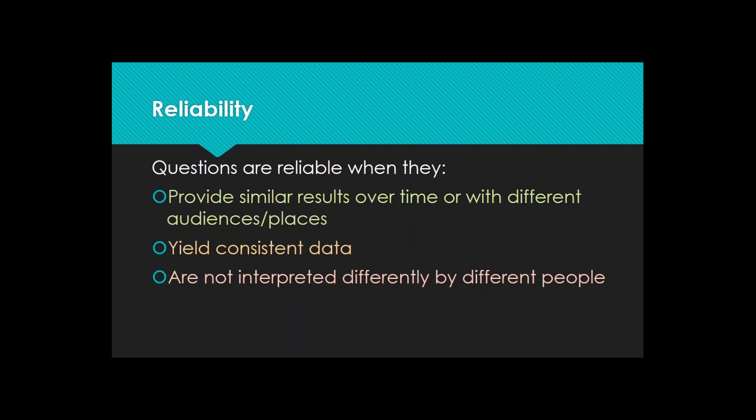Reliability means we get consistent answers on the question. If we were to use the same questionnaire over and over again with similar populations, we would get similar results — that's reliable data. The easiest way to tell if a question is not reliable is when different people interpret and answer it differently. Sometimes reliability has to do with the phrasing or one or two words that could be misinterpreted.